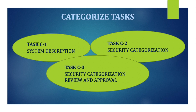Task number two is security categorization, which means go ahead and categorize the system. Task number three is security categorization review and approval, meaning that once you are done categorizing, there is a need to review and approve that categorization you have just done. Those are the three tasks under categorization.